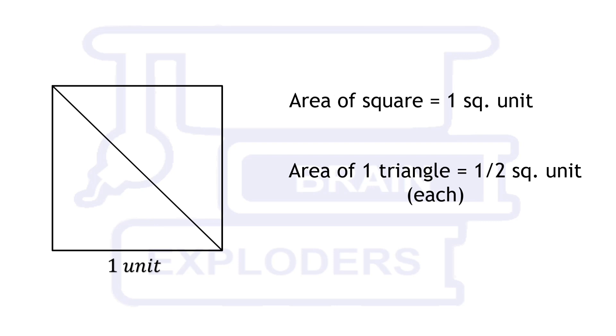This triangle will be divided into two other parts of equal areas so the area of each part will be one fourth square unit.